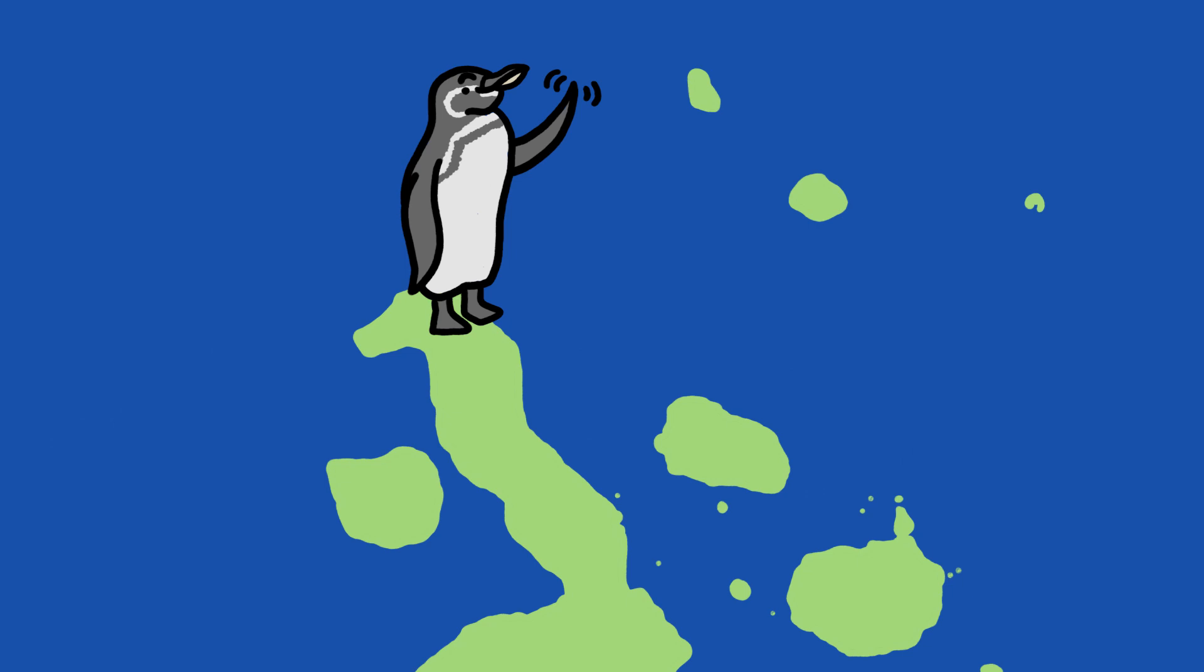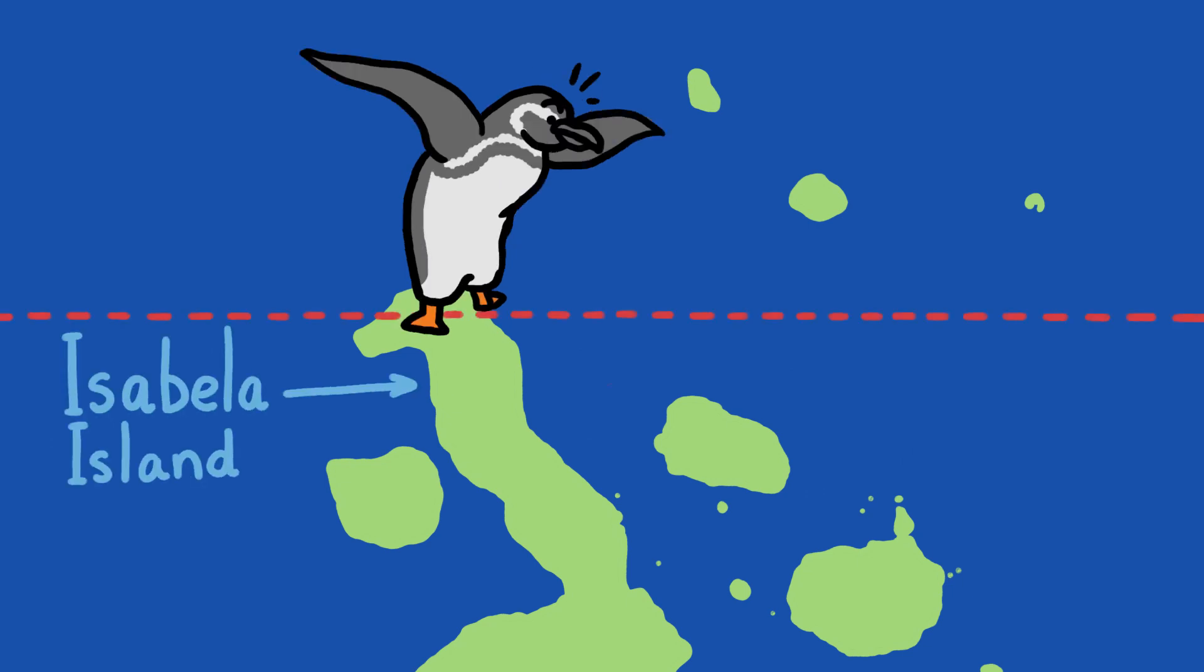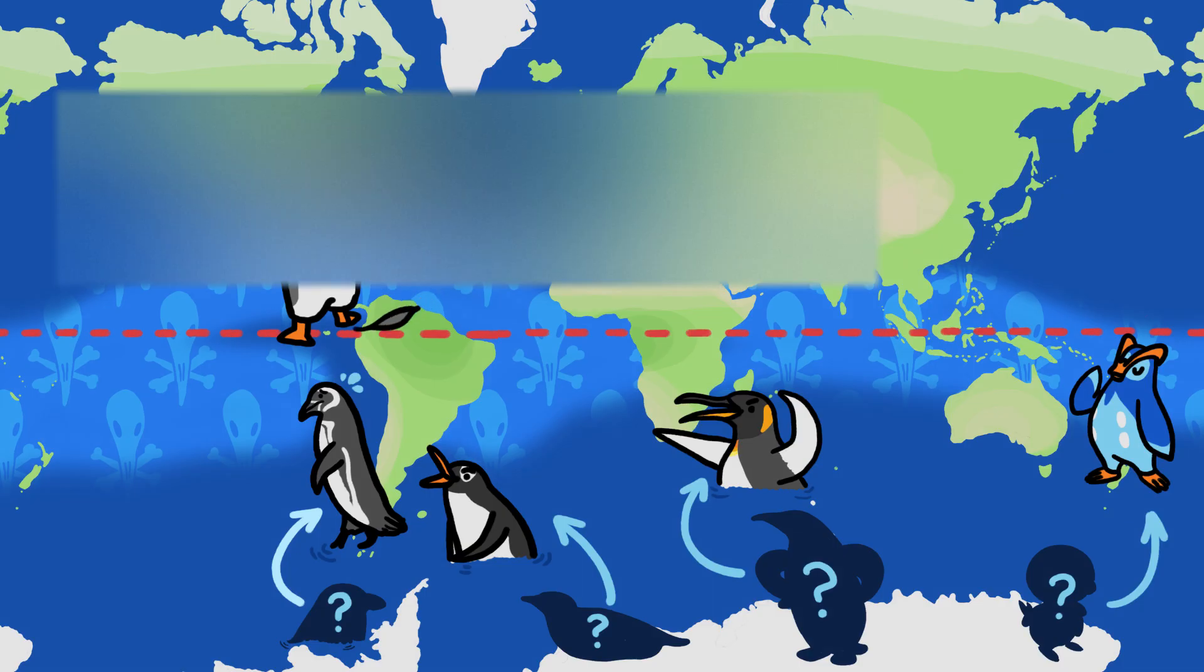In fact, the world's only northern penguins are the Galapagos penguins that live at the tip of Isabella Island, just a hair, or a feather, above the equator.